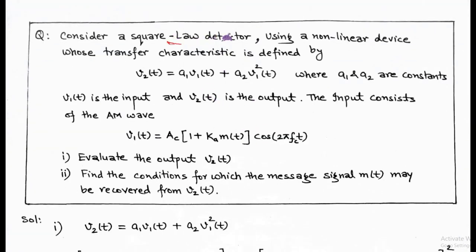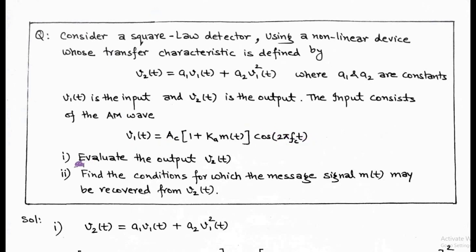The next question: consider a square law detector using a non-linear device whose transfer characteristic is defined by v2(t) = a1·v1 + a2·v1², where a1 and a2 are constants, v1 is the input and v2 is the output. The input consists of an AM wave: v1(t) = Ac·[1 + ka·m(t)]·cos(2π·fc·t). We have to determine: first, the output v2(t), and second, the conditions under which the message signal m(t) may be recovered from v2(t).